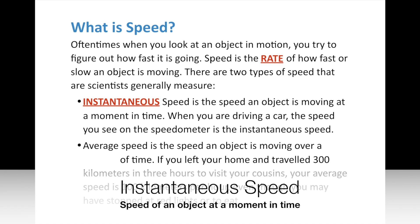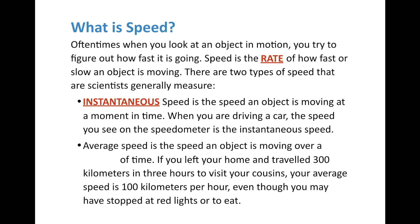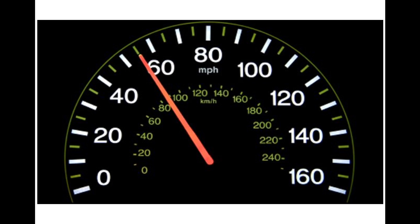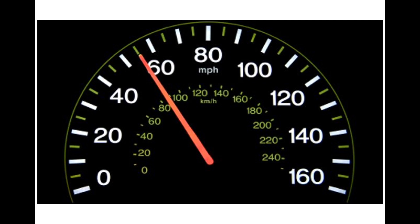There are two general types of speed that scientists measure. The first is instantaneous speed — the speed of an object at a moment in time. When you're driving a car, whatever speed you see on the speedometer is the instantaneous speed. If I look at it and see about 95 kilometers per hour, that's the instantaneous speed at that moment. It might change before or after, but whenever you look at the speedometer, that's instantaneous speed.